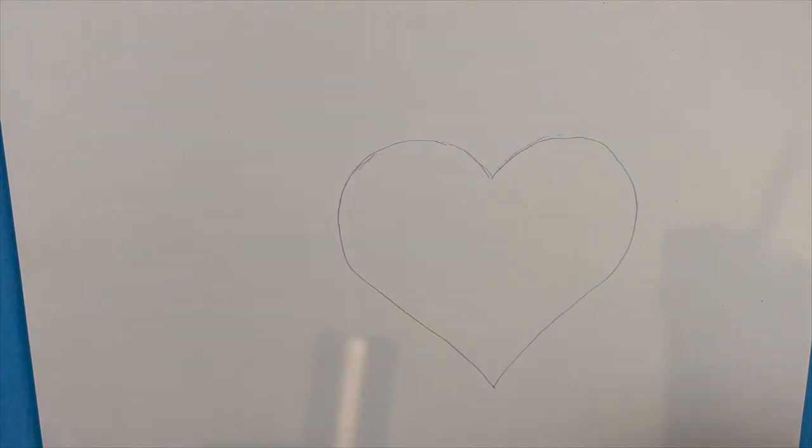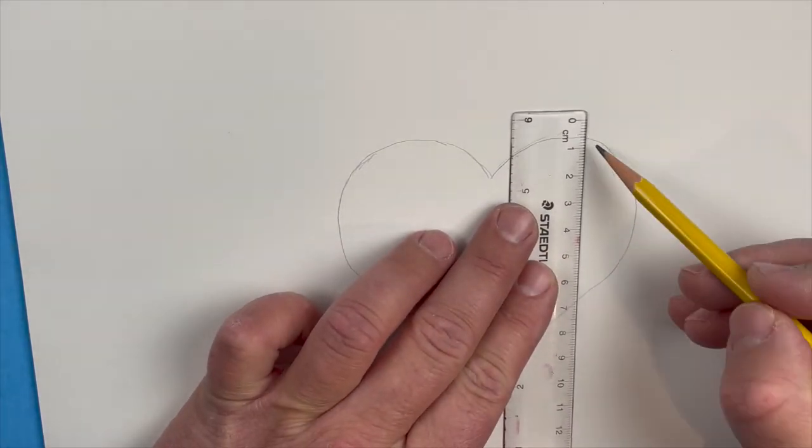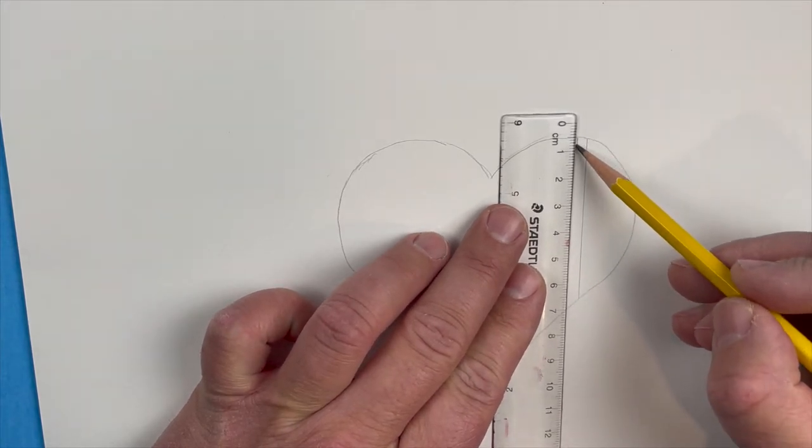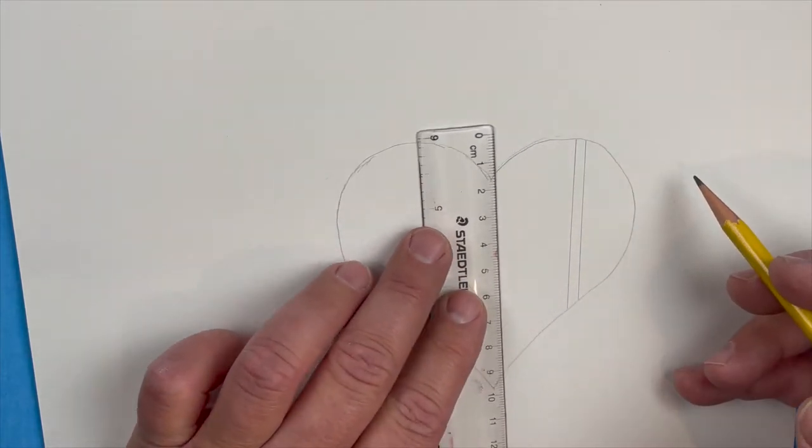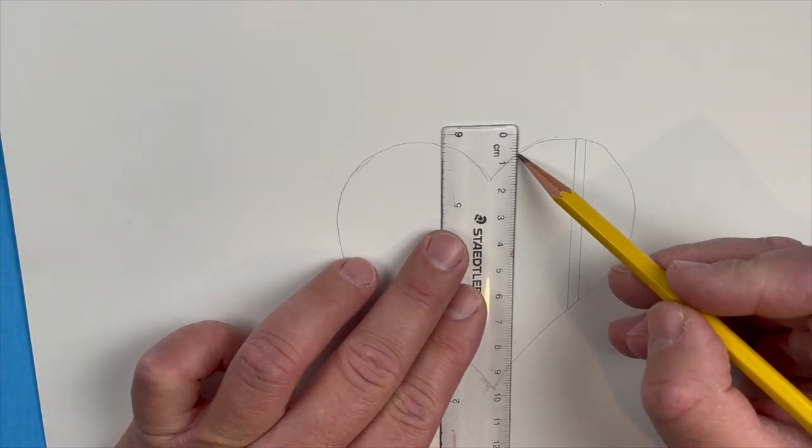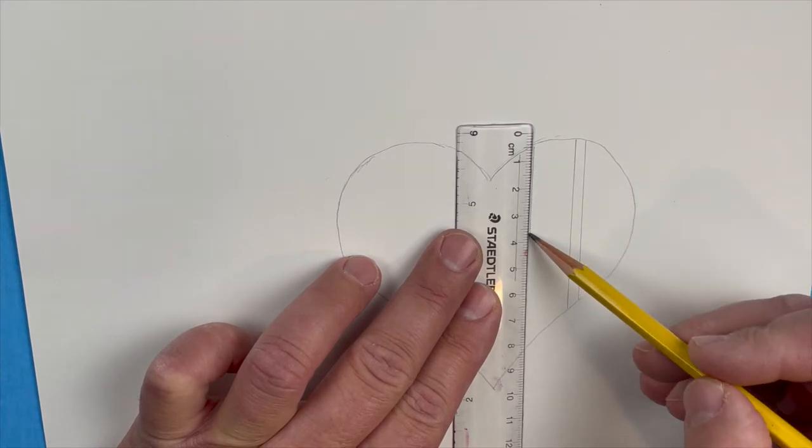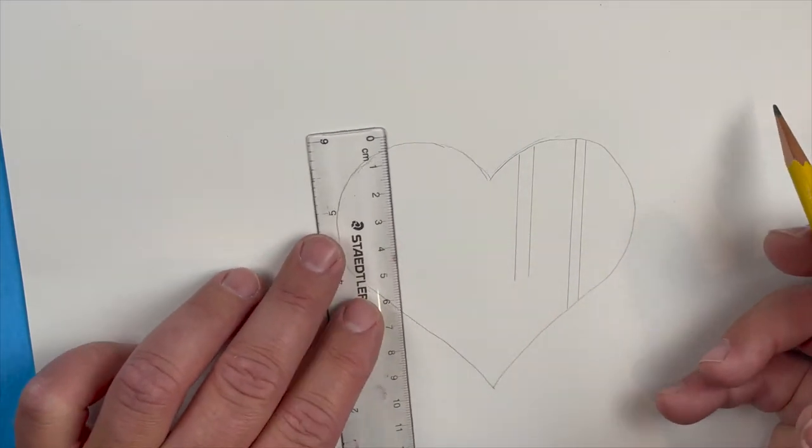Once we do that, you're going to take a ruler and draw a line on one side straight down. Make a second line, kind of like a quarter inch or eighth inch off, maybe a half a centimeter.